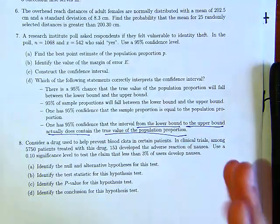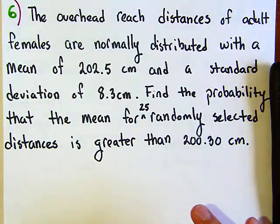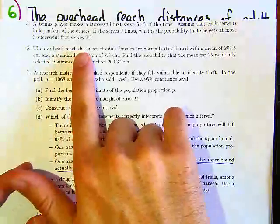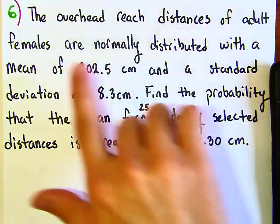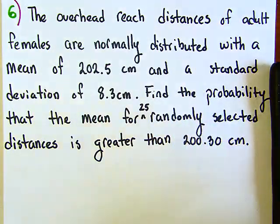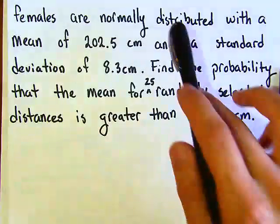Alright, question number six, let's do this. I wrote it down for us. It says the overhead reach distances of adult females are normally distributed. So the second you read 'normally distributed,' the first visual you should have is some sort of normal distribution.